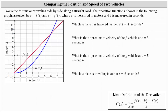Two vehicles start out traveling side by side along a straight road. Their position functions, shown in the following graph, are given by s equals f of t and s equals g of t, where s is measured in meters and t is measured in seconds. The first question is: which vehicle has traveled further at t equals four seconds?